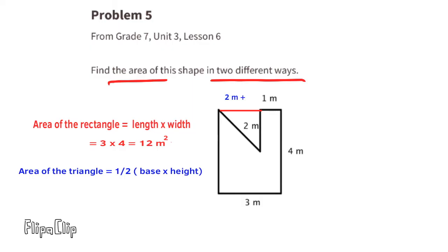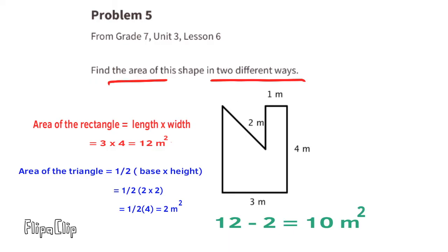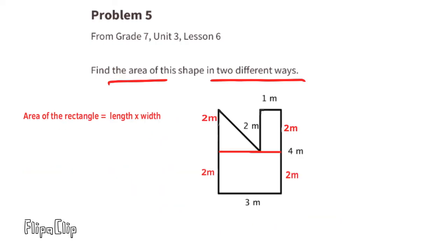We need to subtract the area of the little triangle. The area of a triangle is one-half of the base times the height. This triangle has a base of 2 meters and a height of 2 meters, so half of 2 times 2 is 2 meters squared. Subtracting: 12 minus 2 equals 10 meters squared. The area of this shape is 10 meters squared.